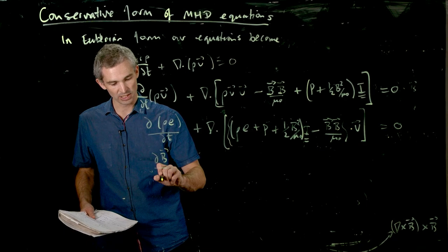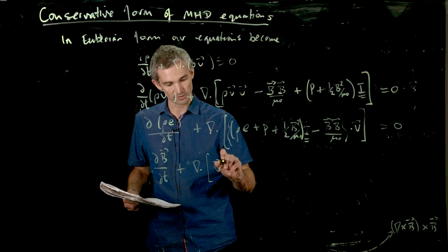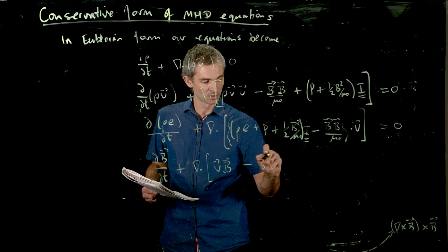And you can also actually write the induction equation in a kind of conservation form, which is useful sometimes. But you can prove this one to yourself as well. And again, we're in kind of dyad notation, minus b v, equals zero.